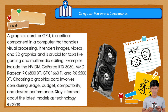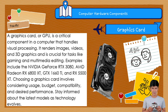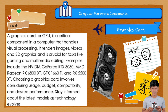Next, the graphics card. A graphics card, or GPU, is a critical component in a computer that handles visual processing. It renders images, videos, and 3D graphics and is crucial for tasks like gaming and multimedia editing. Examples include the NVIDIA GeForce RTX 3080, AMD Radeon RX 6800 XT, GTX 1660 Ti, and RX 5500 XT. Choosing a graphics card involves considering usage, budget, compatibility, and desired performance. Stay informed about the latest models as technology evolves. In other words, graphics cards are responsible for creating stunning visuals — just like an artist's brush paints beautiful pictures, they handle complex graphics and make video games, movies, and visual effects come alive on your screen.